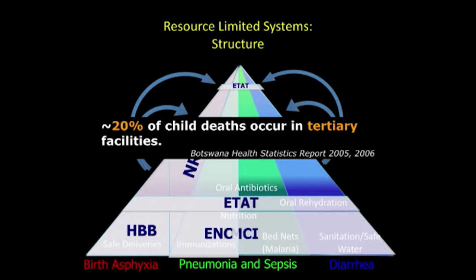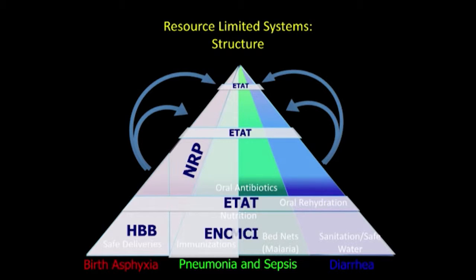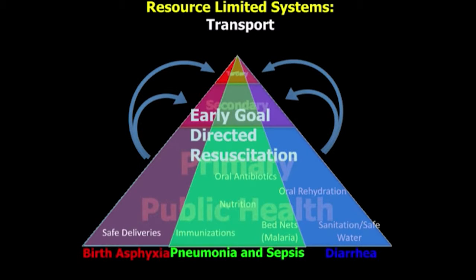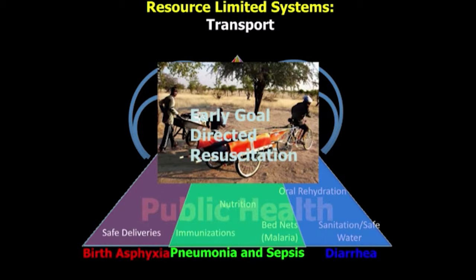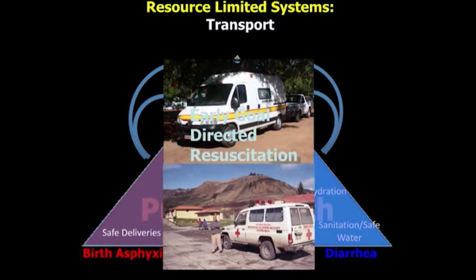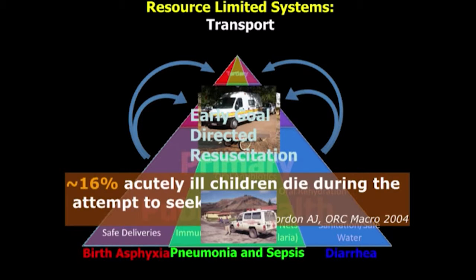Only 20% of deaths occur in tertiary facilities, so if we're going to make an impact, we have to treat sepsis where it's occurring — whether in a developing or resource-rich country. This quarter of childhood deaths could perhaps be addressed if we could do resuscitation without walls with early goal-directed therapies. We know that transport systems and transport teams are often not well-equipped, and even when community or district hospitals provide care, patients frequently go down a level during transport with very little ongoing care. Sixteen percent of acutely ill children died during the attempt to seek care — so we have a lot of room for improvement.